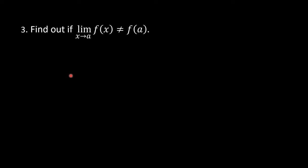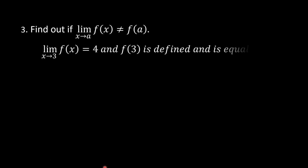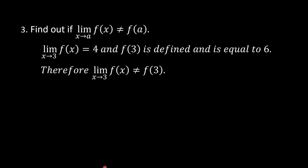Third step: find out if the limit of f of x as x approaches 3 is not equal to f of a. We found that the limit equals 4, and f of 3 is defined and equals 6. Therefore, the limit does not equal f of a, confirming a removable discontinuity.